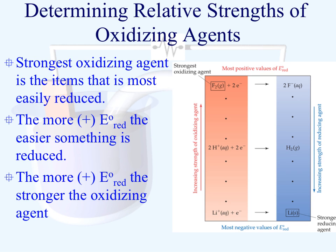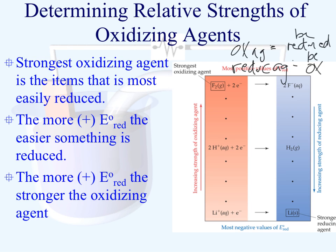The last thing is connecting standard reduction potentials to the definitions of oxidizing and reducing agents. The oxidizing agent is the thing that gets reduced; the reducing agent is the thing that gets oxidized. The strongest oxidizing agent is the thing most easily reduced — the one with the most positive E naught value. So the more positive your E naught value, the more likely the substance is the oxidizing agent. Now that we understand all these pieces, we can move on to additional information regarding oxidation-reduction processes.